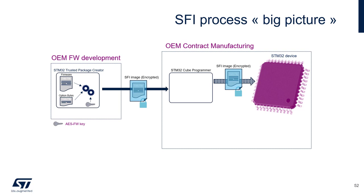The contract manufacturer receives this file but cannot decrypt it. The programmer will send the encrypted file to the target device, such as the STM32WL55.